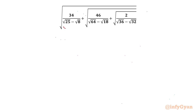I will consider this rational radical expression as A. I will consider this expression as B. And let us say this is our C. Now we have to simplify A, B, C separately. Then we will plug in the values over there.